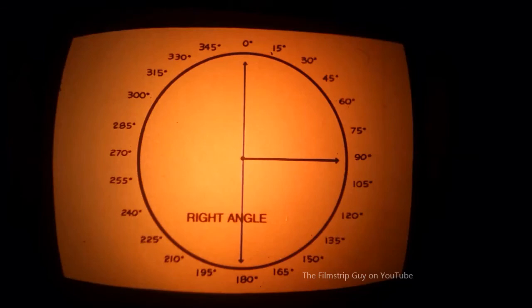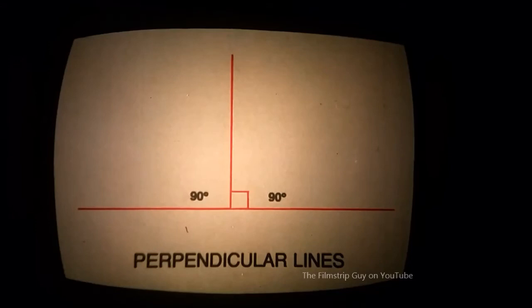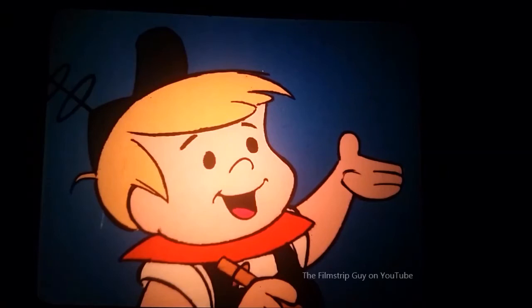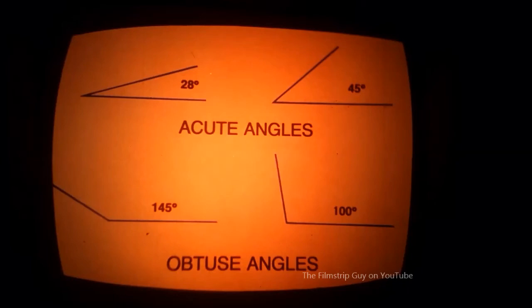Now I shall rotate a third ray, starting at zero degrees and moving toward 180 degrees. Notice that the top angle grows larger as the ray rotates, and the bottom angle grows smaller. The ray reaches a point where the two angles are the same size — 90 degrees each. A 90-degree angle is called a right angle. When rays form a right angle, they are perpendicular. Any two lines or line segments which meet to form right angles are perpendicular. Angles of less than 90 degrees are called acute angles. Angles larger than 90 degrees but less than 180 degrees are called obtuse angles.